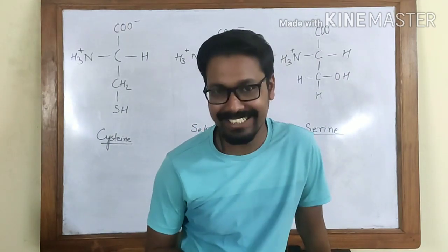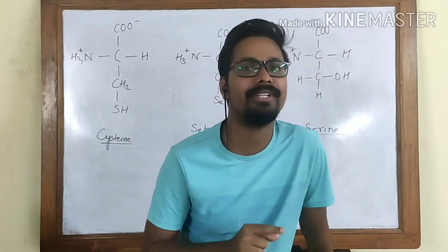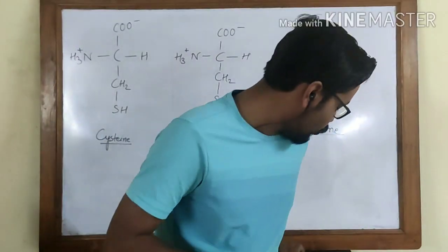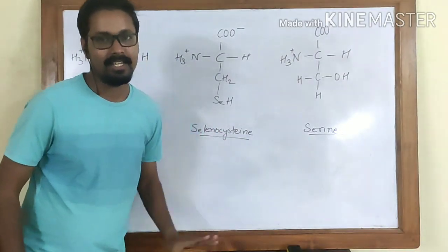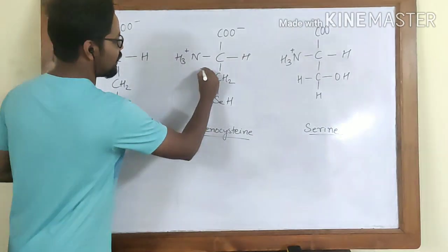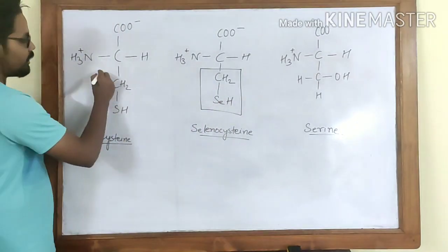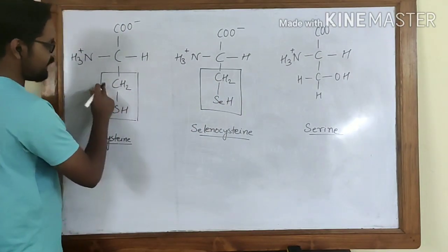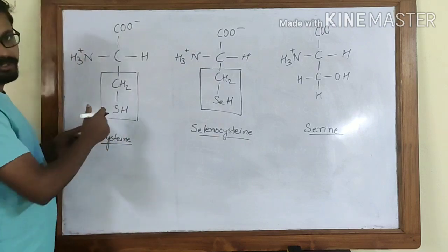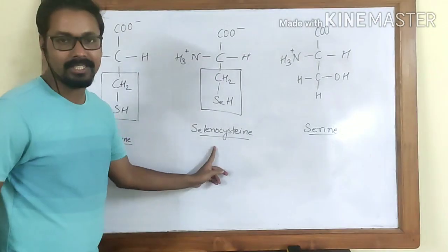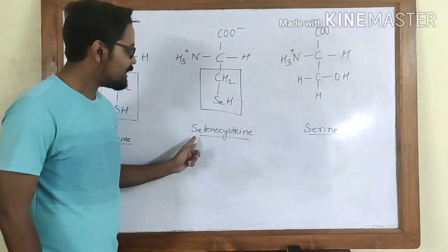Let us begin with selenocysteine. Selenocysteine and pyrrolysine are the two amino acids that are a bit different. If you look at the board we have three amino acids here: cysteine, selenocysteine, and serine. This is the structure of selenocysteine with its R group. It has a similarity with cysteine — the side group of cysteine has CH2 and one sulfur, while selenocysteine has CH2 and one selenium with a hydrogen. So the difference between cysteine and selenocysteine is that in selenocysteine the sulfur is replaced by a selenium. That's why the name selenocysteine.